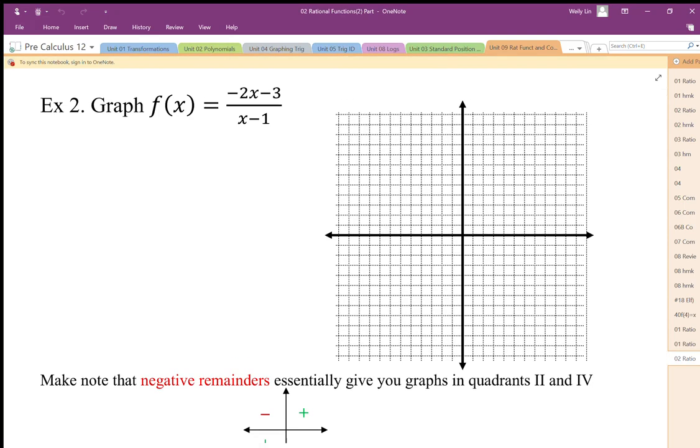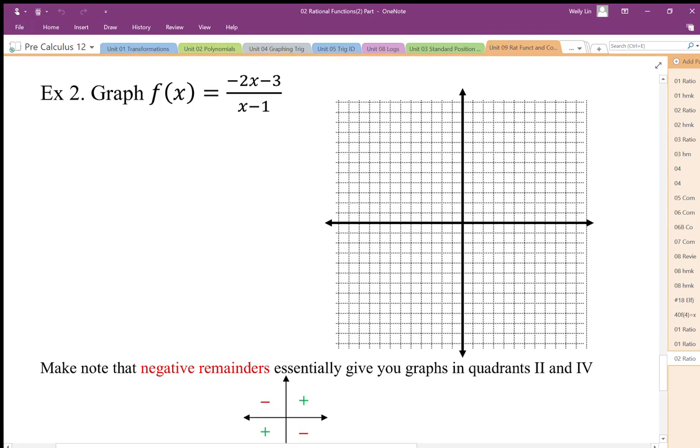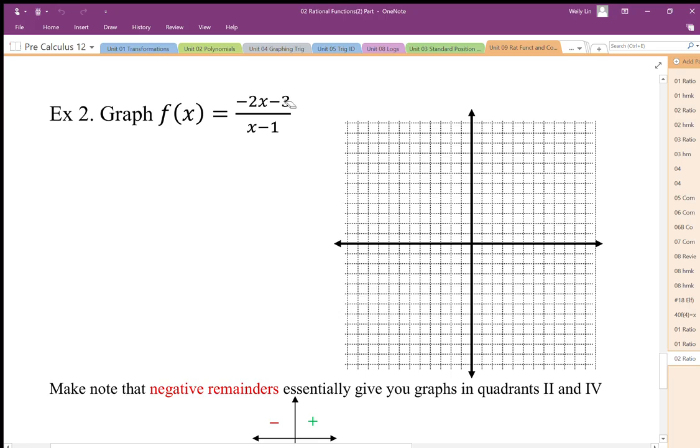I want to reiterate that this strategy is an alternative to using the zeros, the y-intercept and the denominator for the restriction. This is an alternative to that and it is putting into the transformation form. So we'll do again the transformation form.